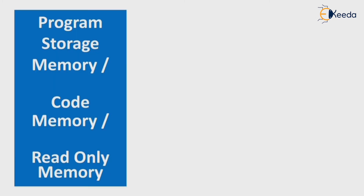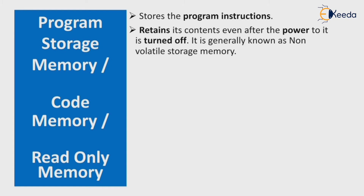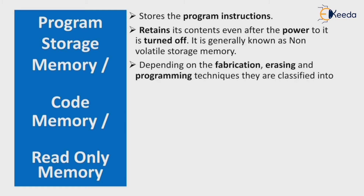Program storage memory is also called code memory or read-only memory — in short, ROM. It stores the program instructions and retains its content even if power is turned off, so it is generally known as non-volatile memory.